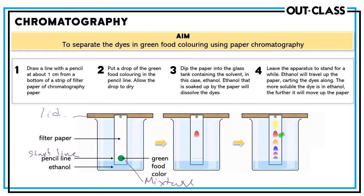If you allow it to run for some time, the ethanol or solvent will rise on the filter paper and reach near the upper end. In that mixture, the different dyes will separate into distinct spots. If there are three spots, it is a mixture of three substances. If you get only one spot, it means it is a pure substance, not a mixture. The different components separate according to their solubilities.